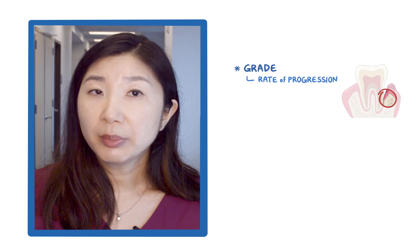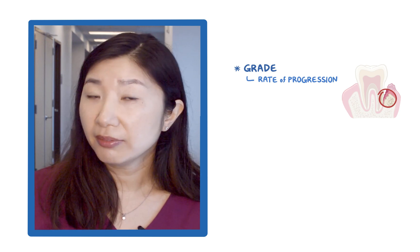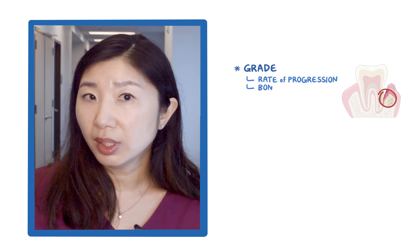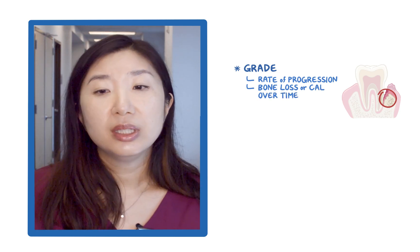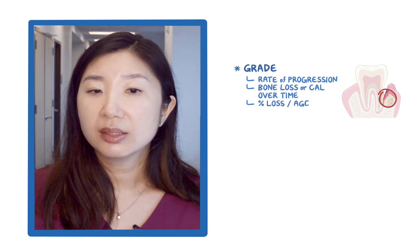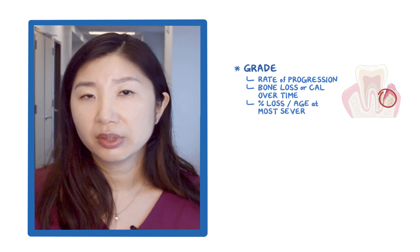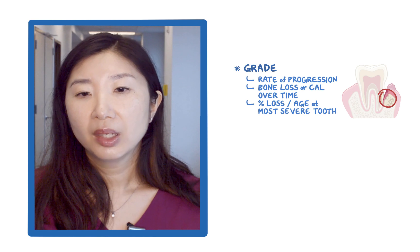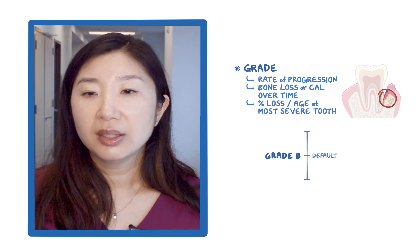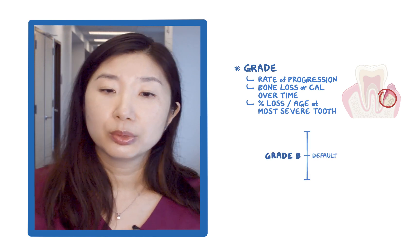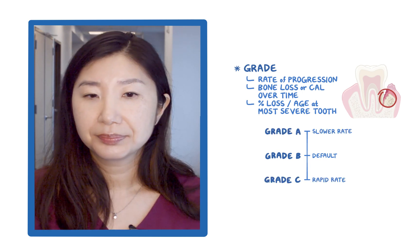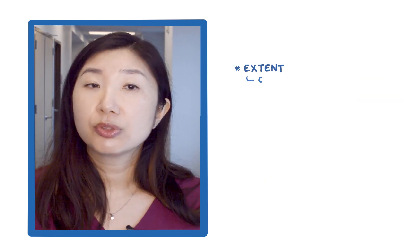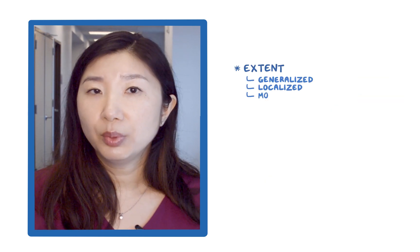Grade is about the rate of periodontitis progression. The primary criteria should be direct evidence or observation of bone loss or clinical attachment loss over time if possible. If not, then use indirect evidence, which is the percentage of bone loss divided by age at the most severely affected tooth. You should assume grade B as a default unless there is evidence to support a slower rate, which is grade A, or a rapid rate, which is grade C. Extent refers to generalized, localized, and molar incisor pattern.